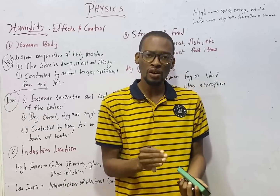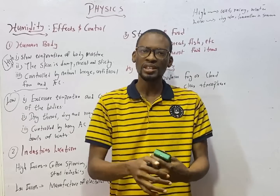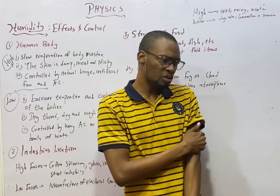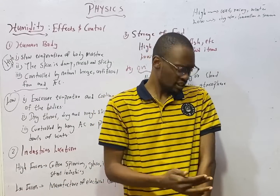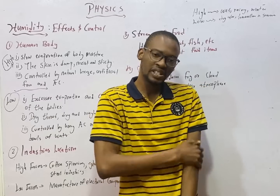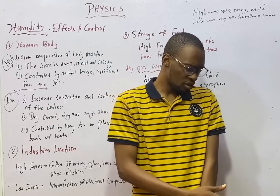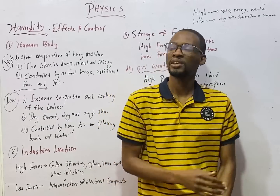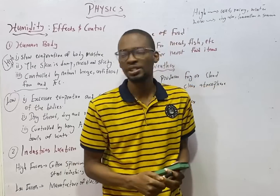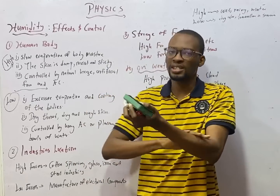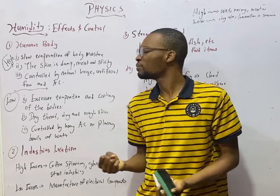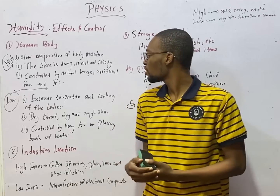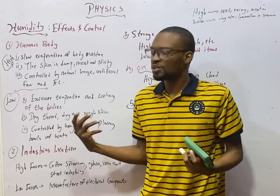According to the law of thermodynamics, heat will naturally move from a hotter body to a cooler body. If the atmosphere is cold, there is little temperature difference, so it will be hard for heat to leave your body. During high humidity, the skin is damp, moist, and sticky. This can be controlled by natural breeze, a fan, or air conditioning.